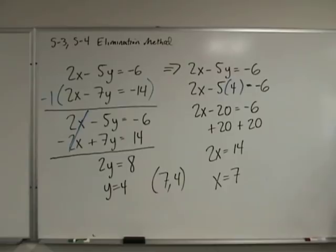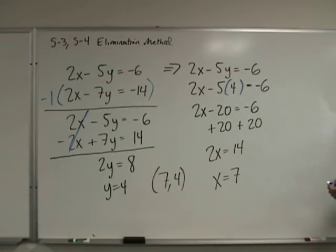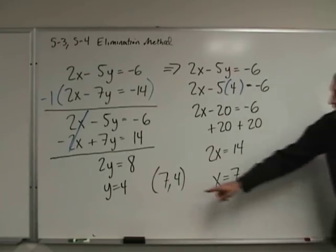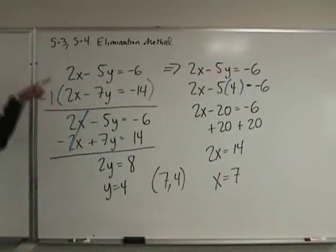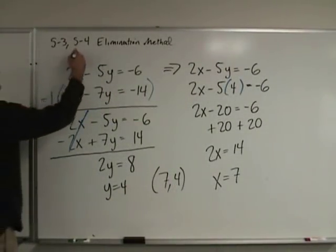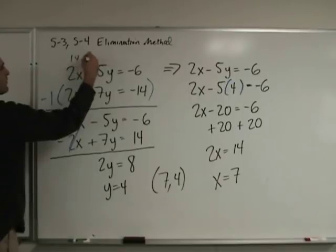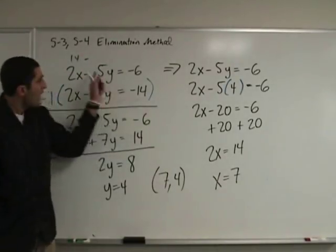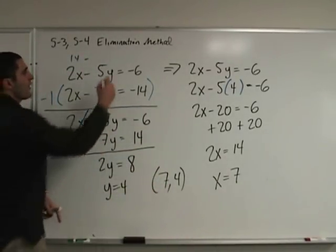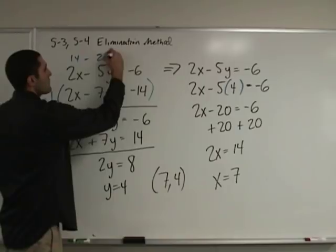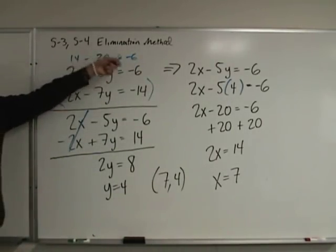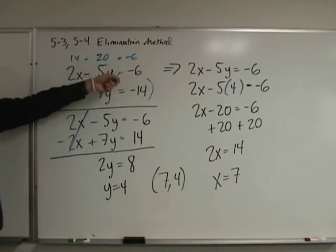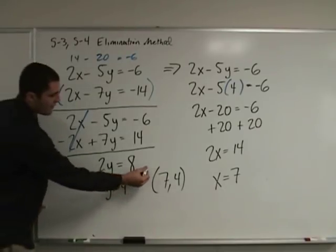To verify: 2 times 7 is 14, minus 5 times 4 is 20, so 14 minus 20 equals negative 6. That checks out — the point (7, 4) satisfies the equation.